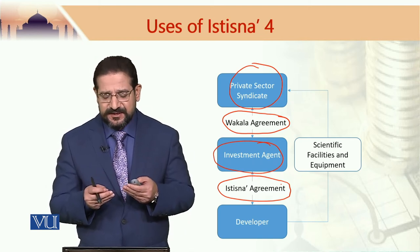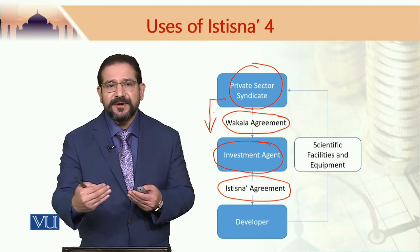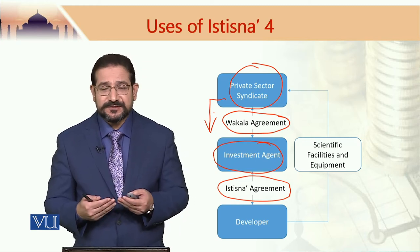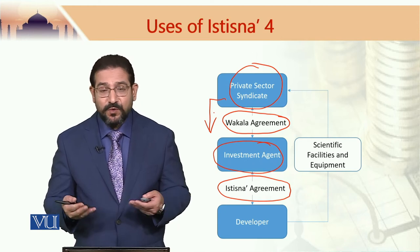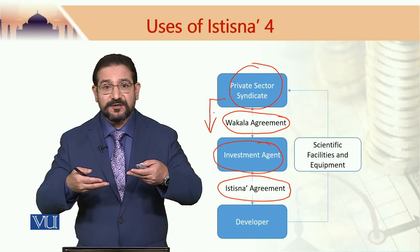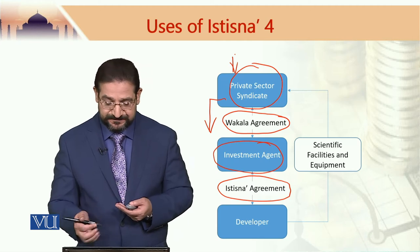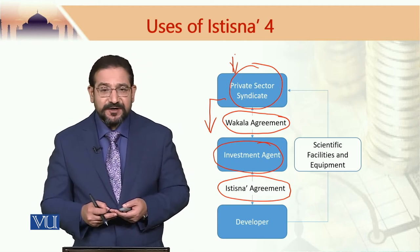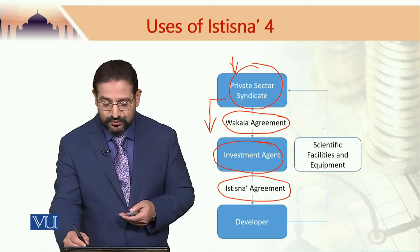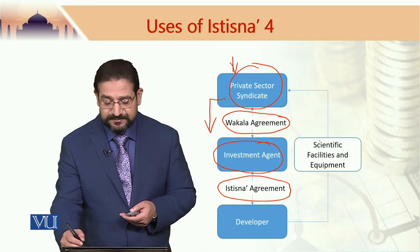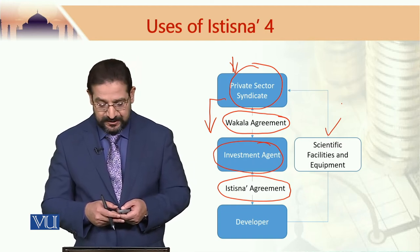The benefit of Istisna is that it allows the syndicate to provide money bit by bit. In this kind of activity, when there is nothing on the ground, many investors may not believe in it. Once construction starts and things start cropping up, the syndicate may actually receive more members — there would be more believers. Once the scientific facility and related equipment have been developed, they would be delivered to the private sector syndicate through the investment agent, as per the Istisna agreement signed between the investment agent and the developer.